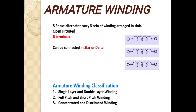Winding terminology can be classified into: conductor, turn, coil, coil side, pole pitch, and slot angle. A conductor is a part of wire which is under the influence of a magnetic field and is responsible for induced EMF. Conductors are placed in armature slots. A turn consists of one conductor in one slot connected to a conductor in another slot, forming a turn.